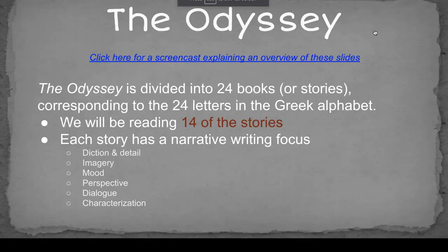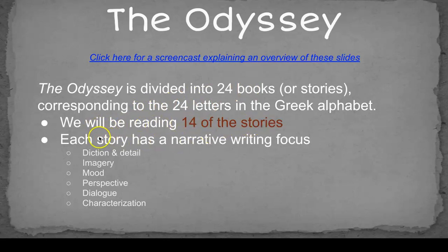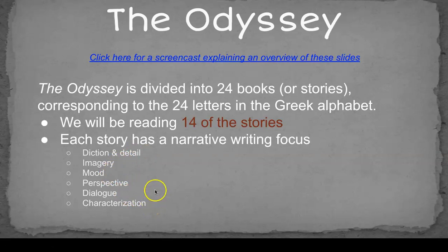Today we're going to go over the Odyssey and the parts of the book that we're going to be reading together as a class. The Odyssey itself is divided into 24 books or stories, and those correspond to the 24 letters in the Greek alphabet. We are only going to be reading 14 of those stories, and every time you read a story, you're going to have a narrative writing focus. We will be looking at diction and detail, imagery, mood, perspective, dialogue, and characterization — all elements of narrative writing — so that later on you can utilize them in your own narrative.